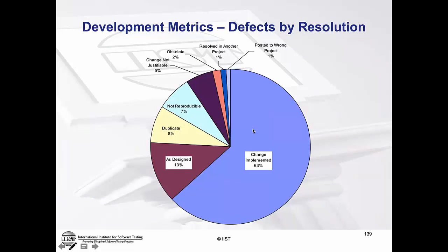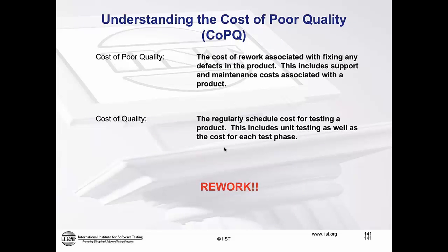Let me touch briefly on defect resolution type — this is how the defect was resolved. Looking at defects marked 'as designed,' meaning the change was implemented as designed — this is an illegitimate defect returned by the development team. I need to understand why my tester thought it was a defect in the first place. I had 8% duplicates, meaning my testers are not talking to each other. I've got 7% non-reproducible — why can't I reproduce it in my test environment but the developers can reproduce it in theirs? These all tell us things about our process.